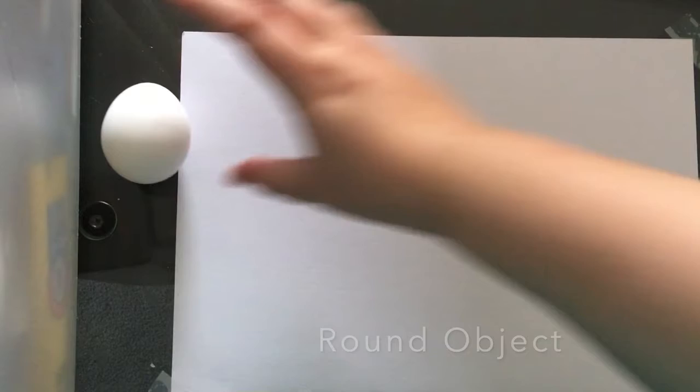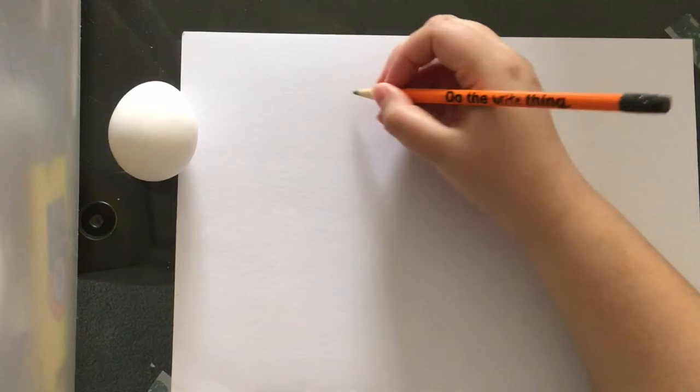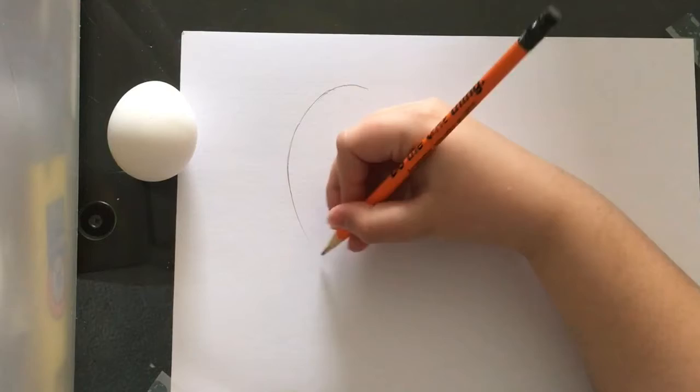First you'll get yourself a small round object, preferably white or a light color so that it shows light and shadow, because that's what we're going to be focusing on today. I'm using an egg, you can use a ping-pong ball, or really any spherical object that you have to look at as a reference.